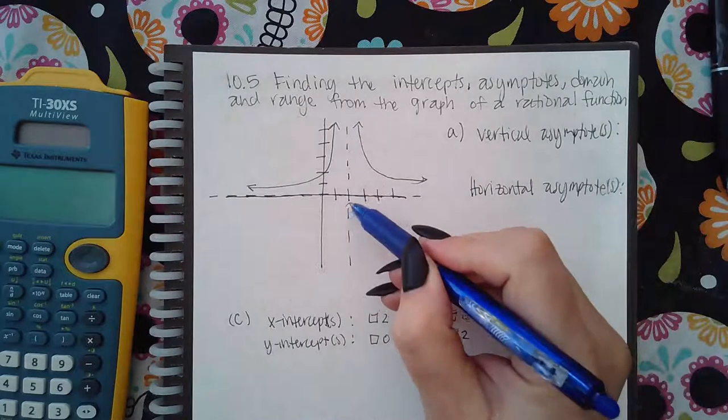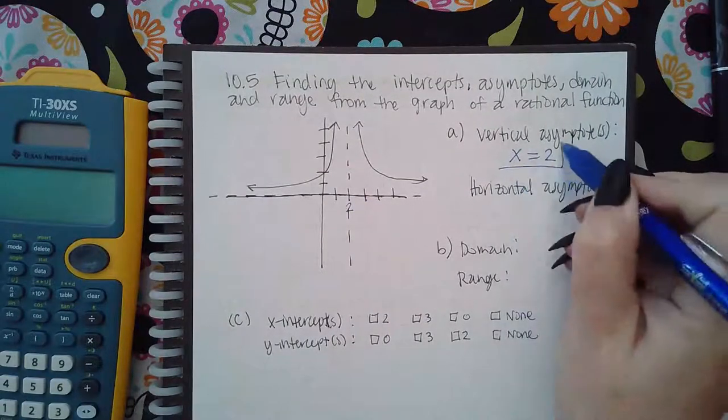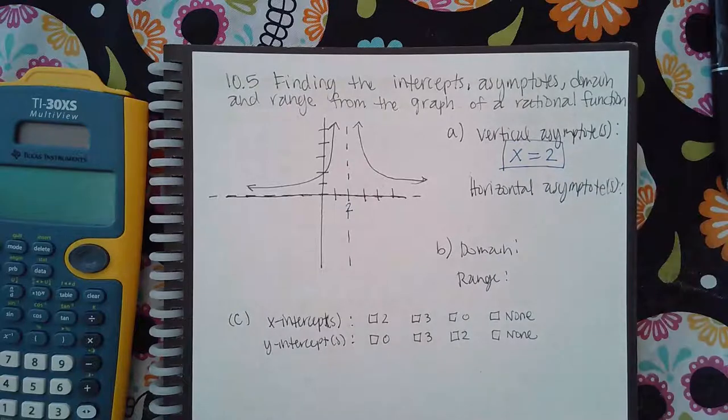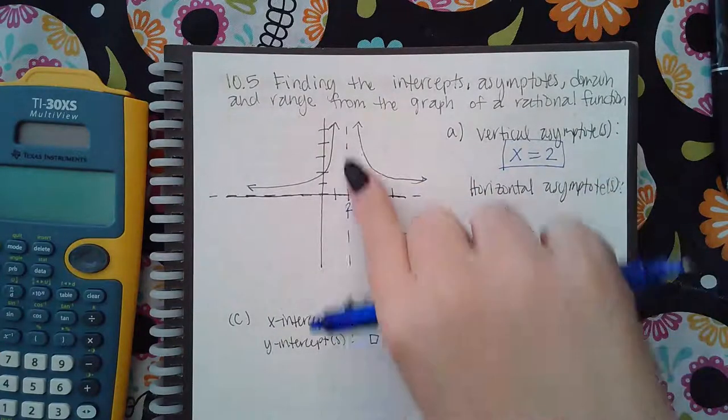Since it occurs at the x-value of two, the equation here is going to be x equals two. Now it's not the number two because it's not a value, it's a line, and lines are represented by equations, so you have to put an equation in there.